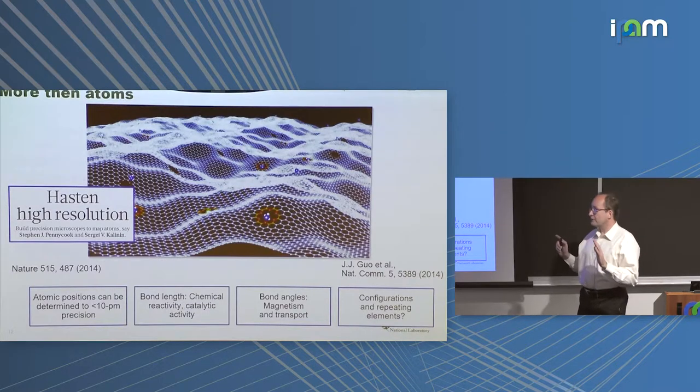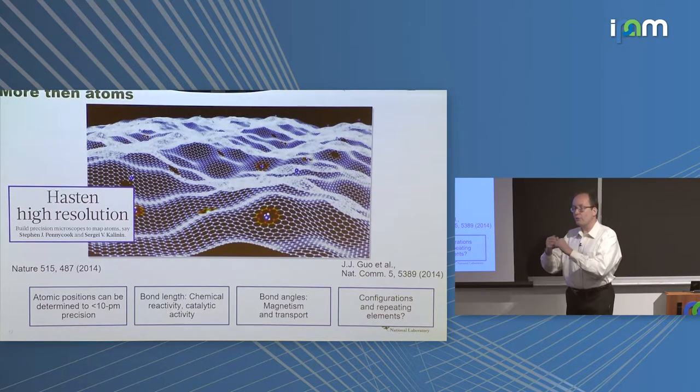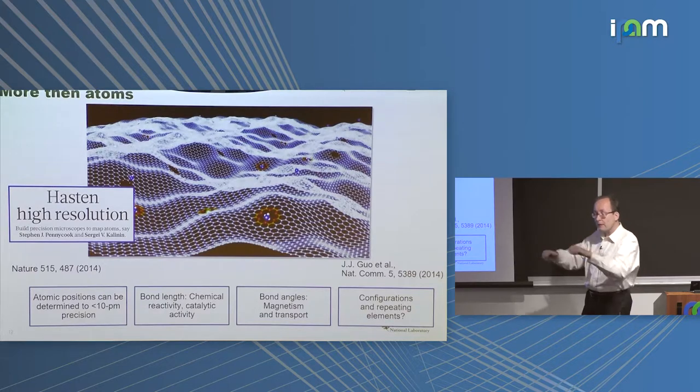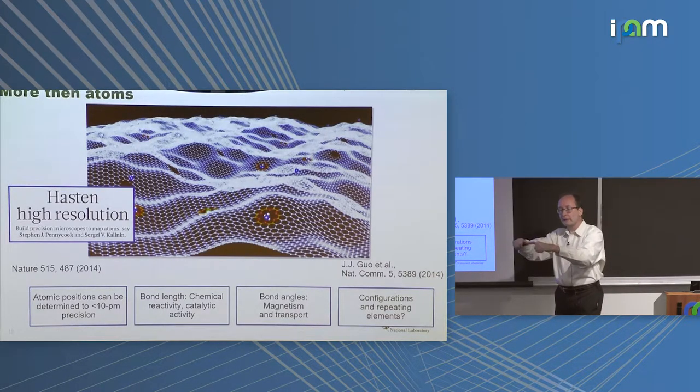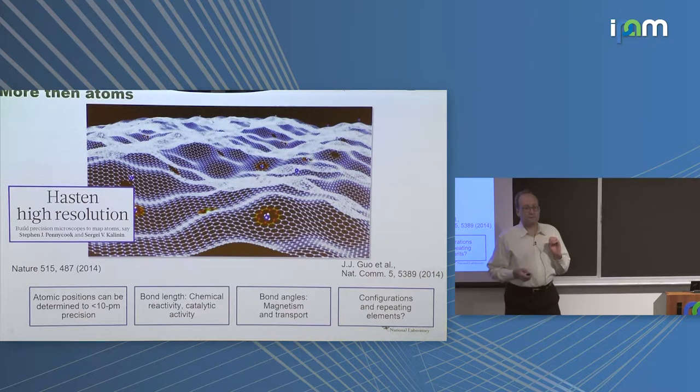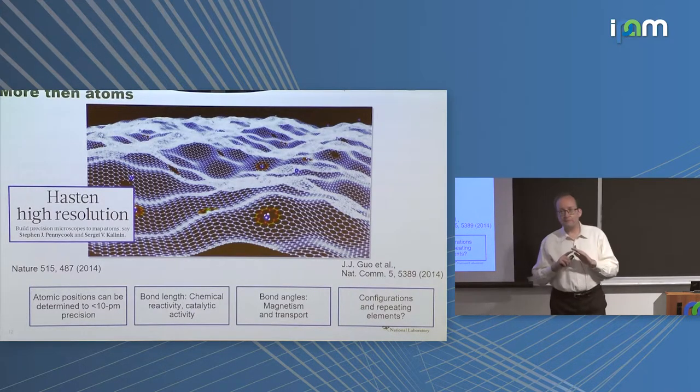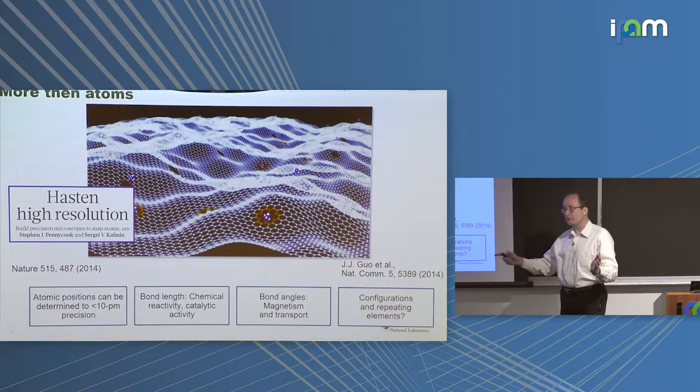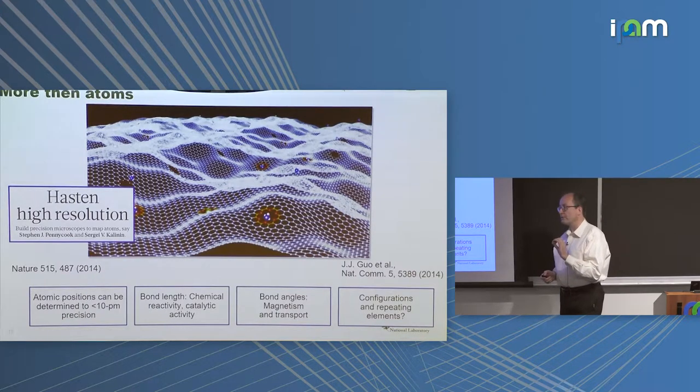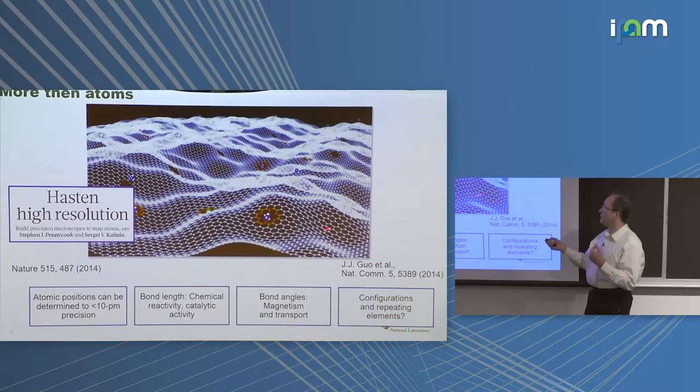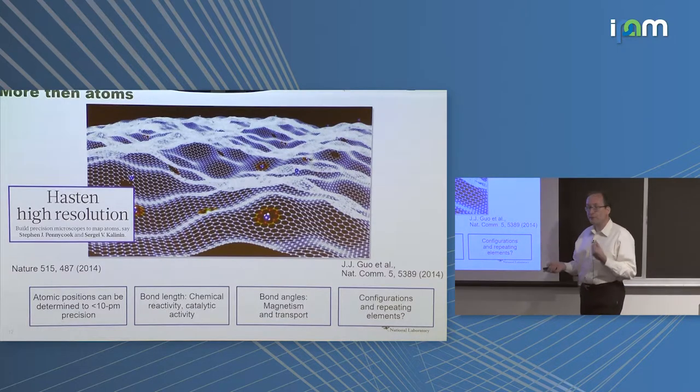It allows you to visualize the structure of solids with rather amazing detail. Each blob here is a single atom. It allows you to create the energy spectra, which tells how much energy the electron beam loses to plasmons, photons, phonons. Traditionally, if I tell you the distance between two carbon atoms, you'd be able to tell me how reactive this material is.